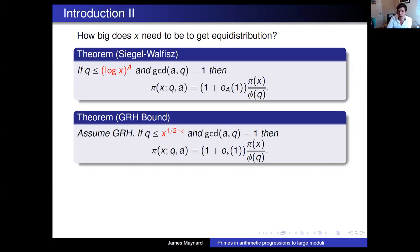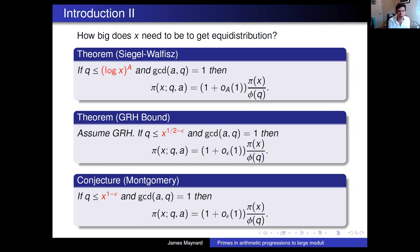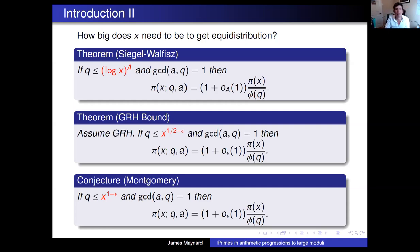Even the GRH bound is way short of what should really be the truth. Montgomery conjectured that you don't need anything like as strong a restriction as q being smaller than the square root of x. In fact, provided q is just a little bit smaller than x — maybe x to the power 0.99 — he conjectured you should still have equidistribution of primes in any given arithmetic progression modulo q. So even the GRH is not giving us anything quantitatively like the truth, although it's a noticeable improvement on the original Siegel-Walfitz bound.